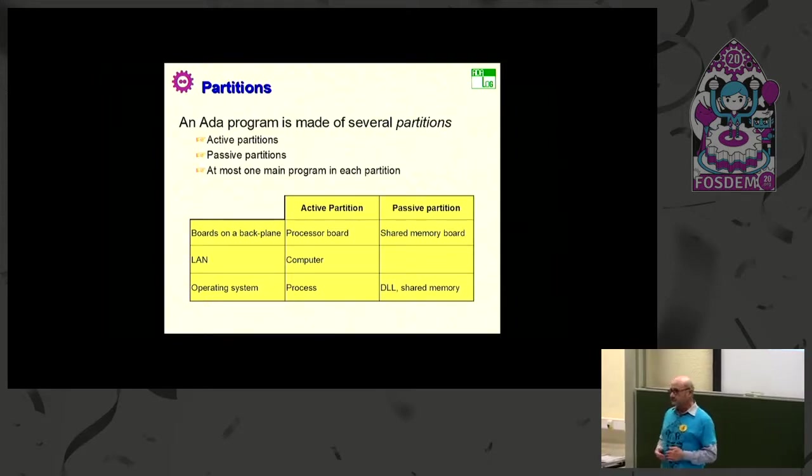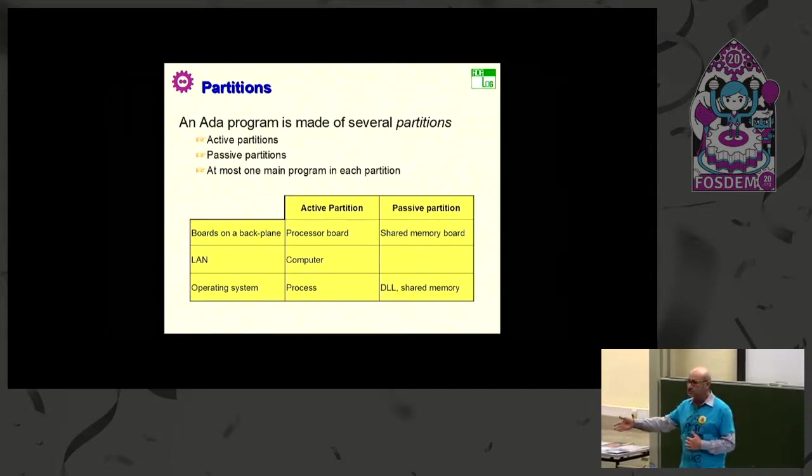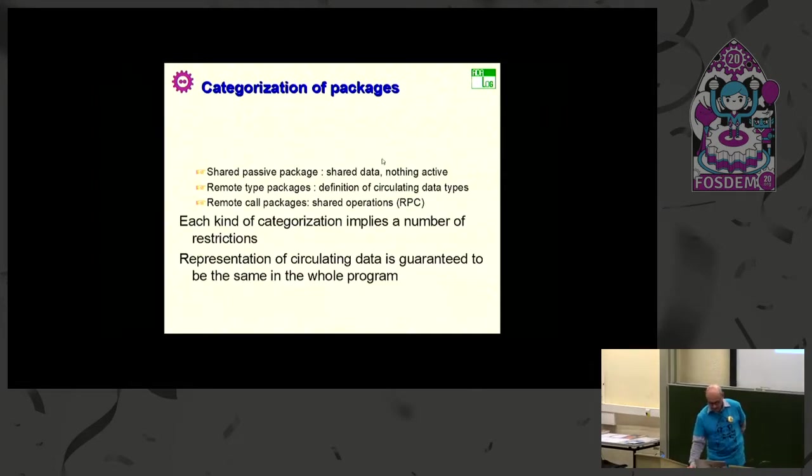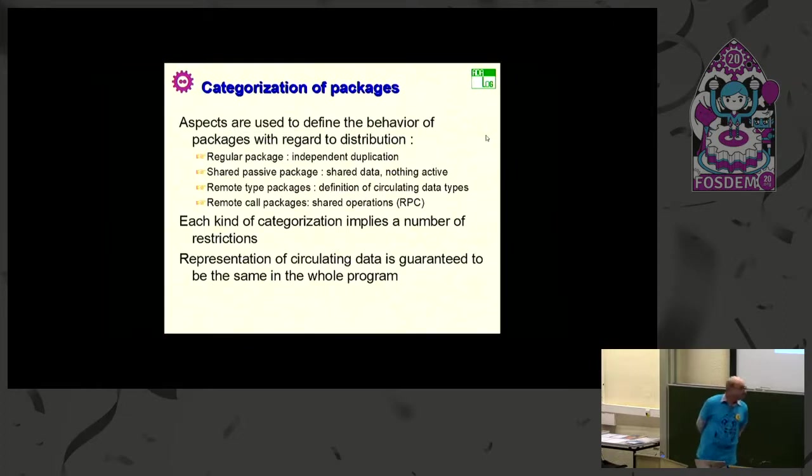What I mean is, if you take, for example, Java's remote method invocation, you designate a remote object through its IP address. So, it's purely Internet. There's nothing else you can do with it. Here, it has been carefully made independent of any particular network.